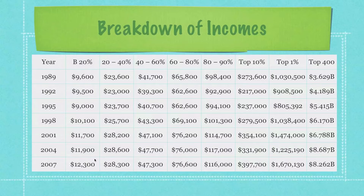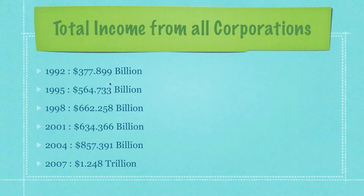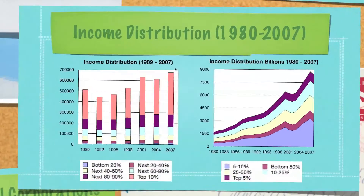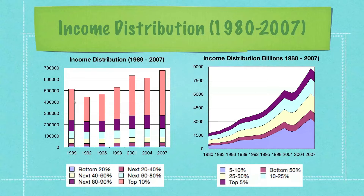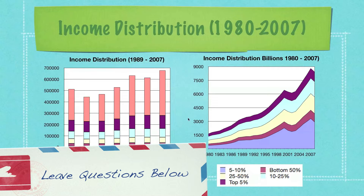Here I provide real numbers showing average income for the bottom 20%, the next 20 to 40%, the next 40 to 60%, and the next 60 to 80%, from 1989 to 2007. The bottom 20% had an average income in 1989 of $9,600, and today that number is $12,300. You can see all the other brackets and how they've changed. I also show changes for the top 10%, the top 1% from 1989 to 2007, and the top 400. You can see here from multiple angles how these numbers have increased dramatically.